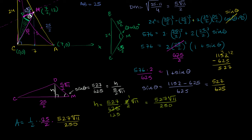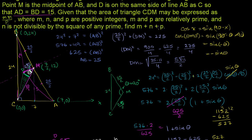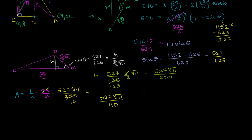The area is 527 times √11 over 40. The problem asks for m plus n plus p, where the area equals m√n over p. So m equals 527, n equals 11, and p equals 40. Therefore m plus n plus p equals 527 plus 11 plus 40 equals 578.